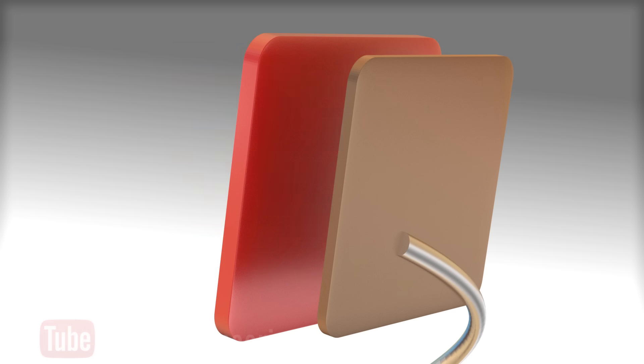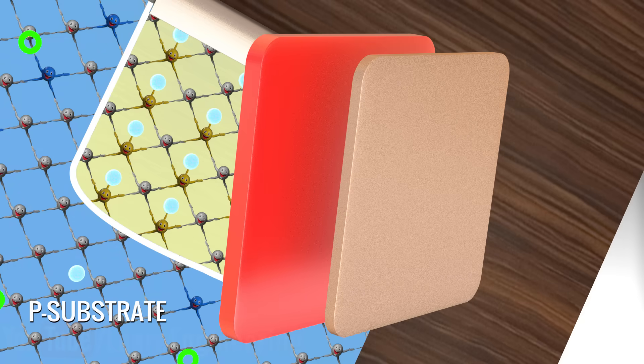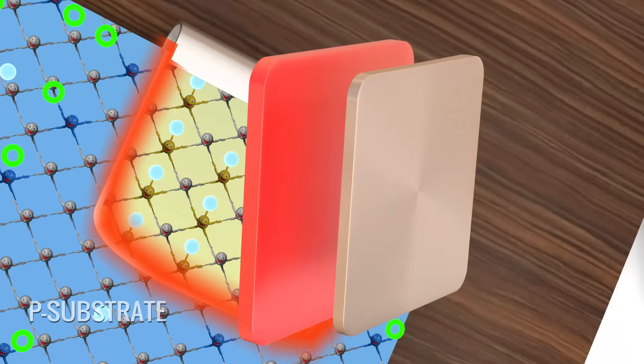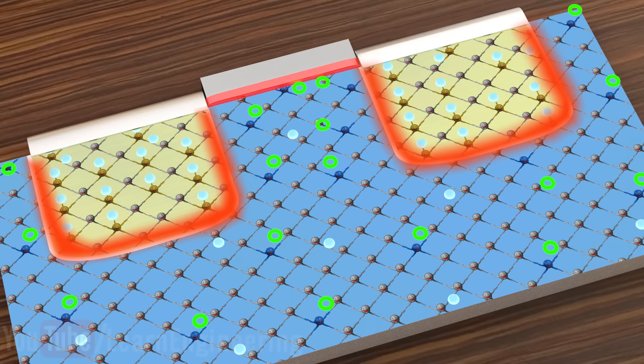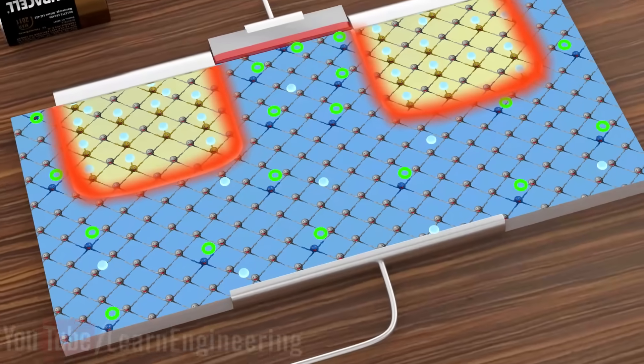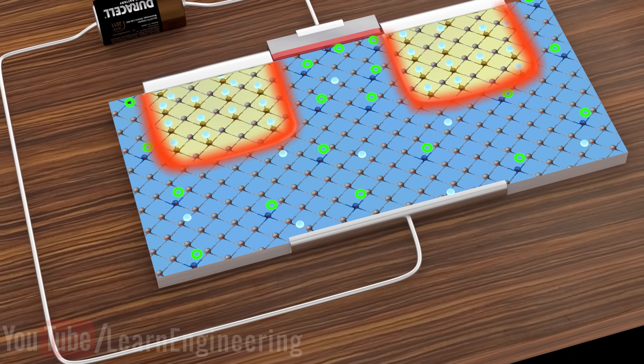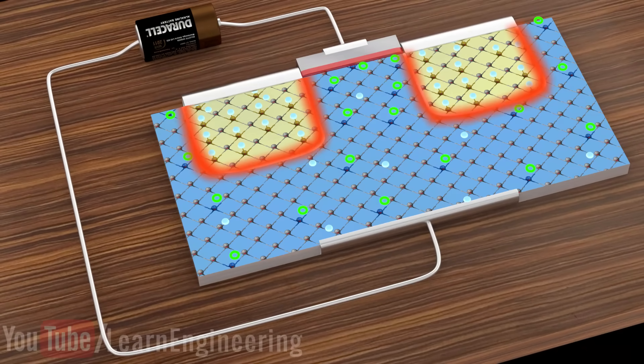This accumulation of charge creates an electric field between the plates. Let's replace one plate of the capacitor with the P-type substrate of the MOSFET. If you connect a power source across the MOSFET as shown, just as in a capacitor, the electrons will leave the metal plate.